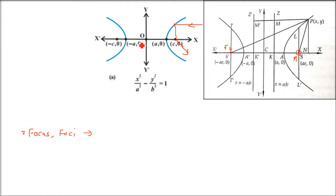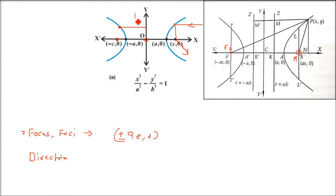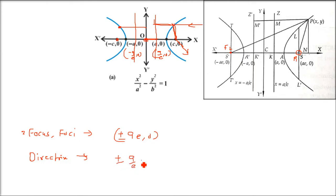If we want to point out the coordinates: it is ae on the right side and minus ae on the left, so combining them: plus-minus ae, 0. Coming to the directrix — for any point on the hyperbola, the ratio of its distance from the directrix to its distance from the focus equals the eccentricity. The directrix is at a distance of a over e from the center, so its equation is x equals plus-minus a over e.